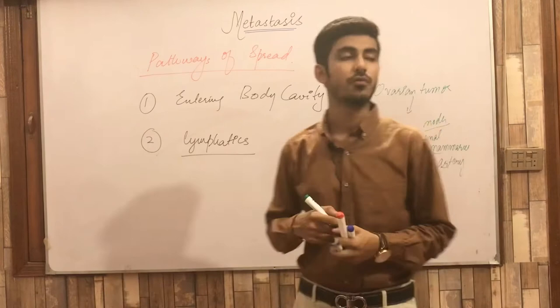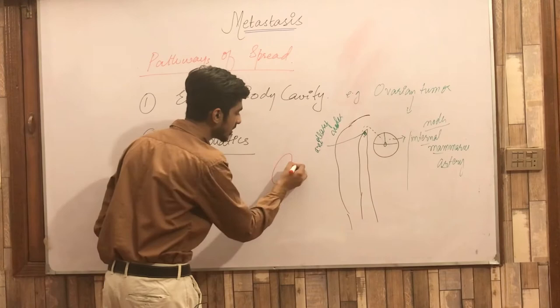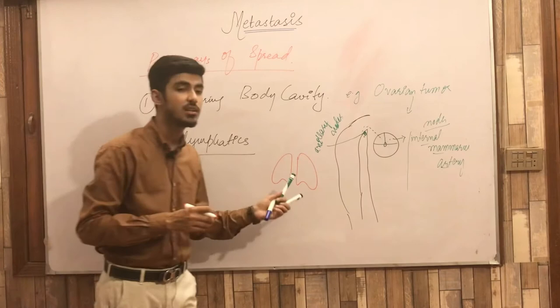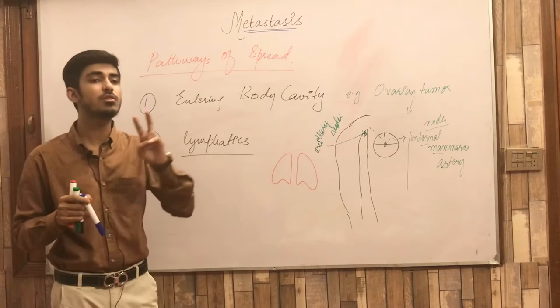Another example: in the lungs, a tumour spreads through the lymphatic channels into the tracheobronchial lymph nodes or the mediastinal lymph nodes. So these are the lung tumours spreading through lymphatic vessels.